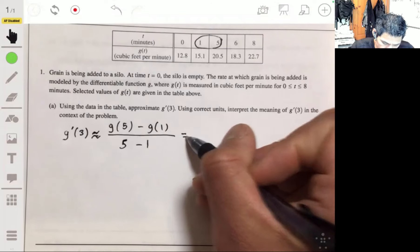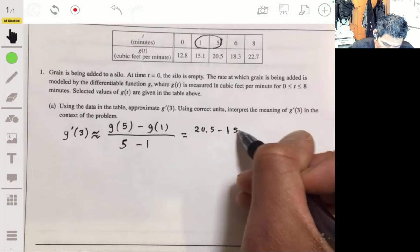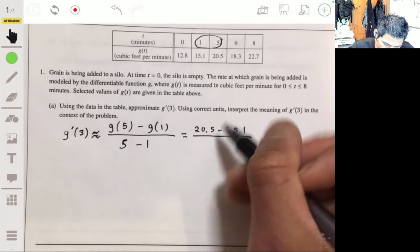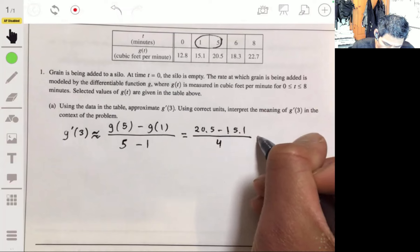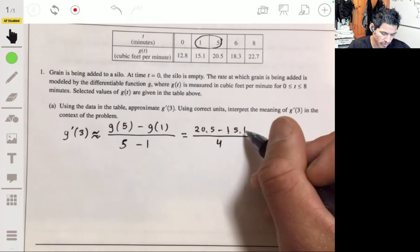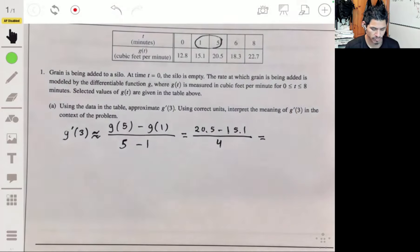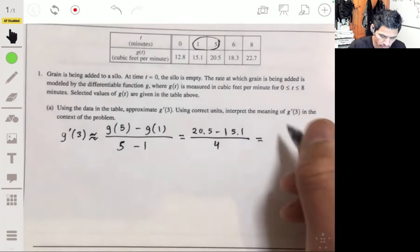So we're going to take g of five minus g of one over five minus one. And since it's an approximation, let's use an approximate symbol there. And then we'll get 20.5 minus 15.1 over four, which will be 5.4 over four. Using our calculator, we'll get 1.35.